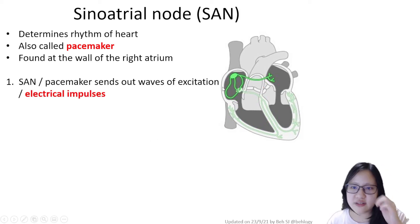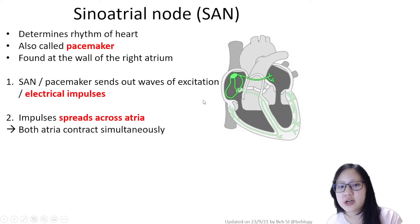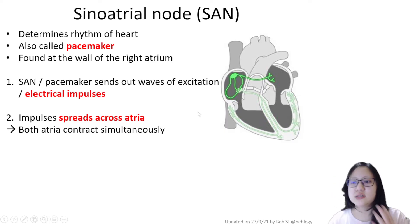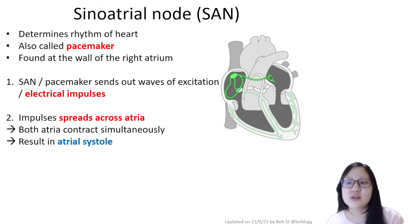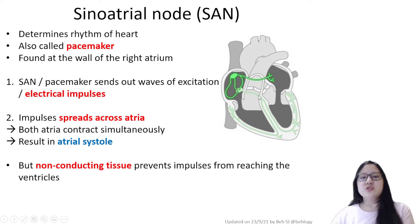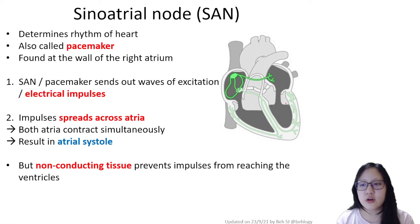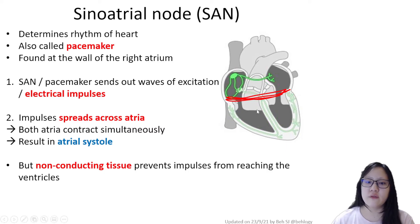The sinoatrial node sends out waves of excitation or electrical impulses, and these impulses spread across the atria, causing both atria to contract simultaneously — this results in atrial systole. The strange thing is that the impulse doesn't spread to the ventricles, because there is a non-conducting tissue band across it, which prevents impulses from reaching the ventricle.